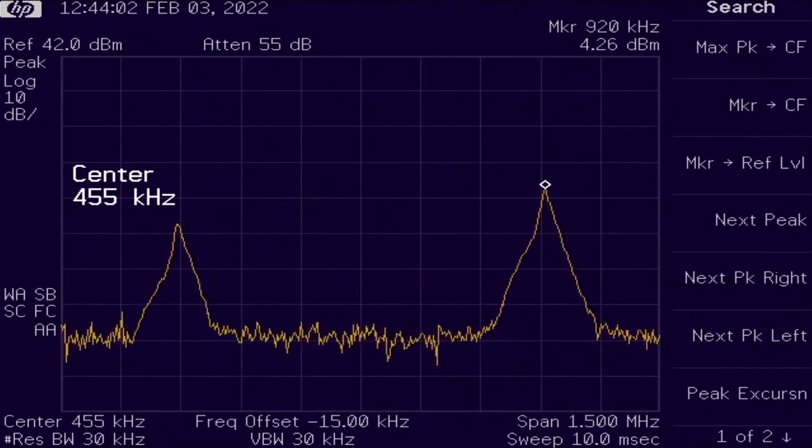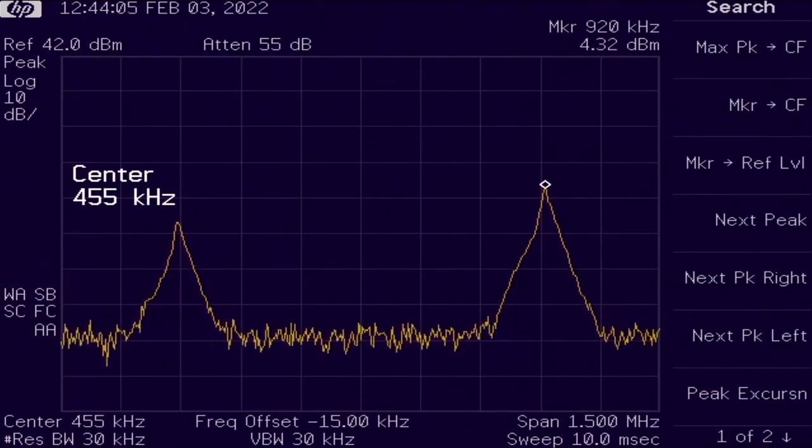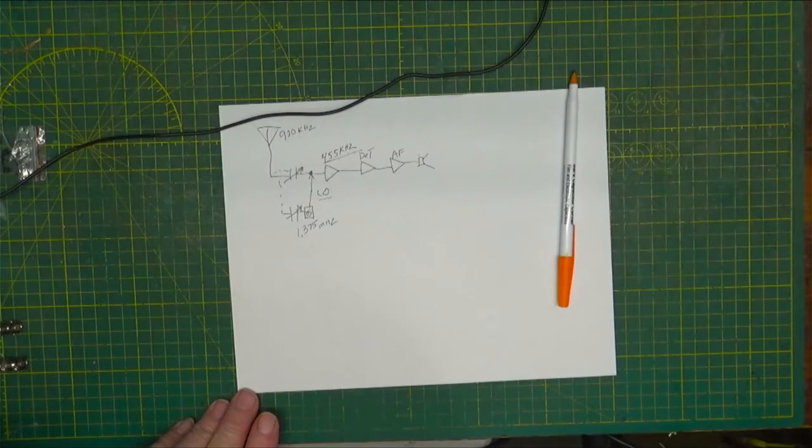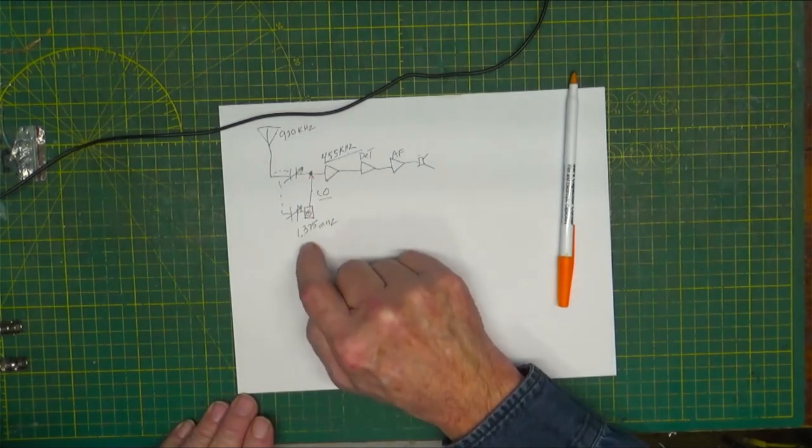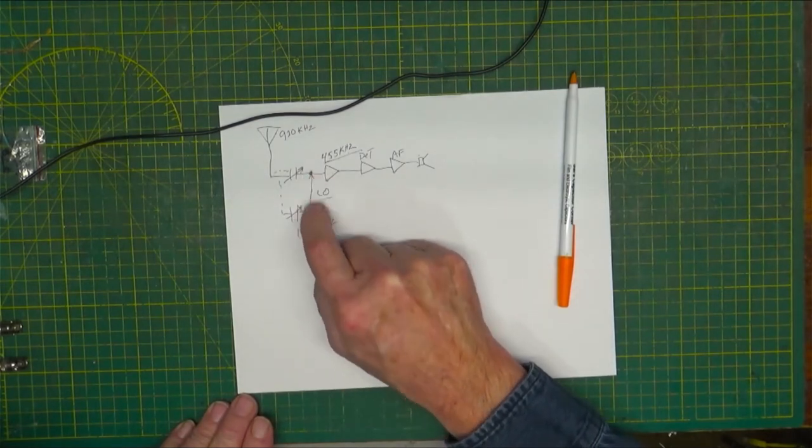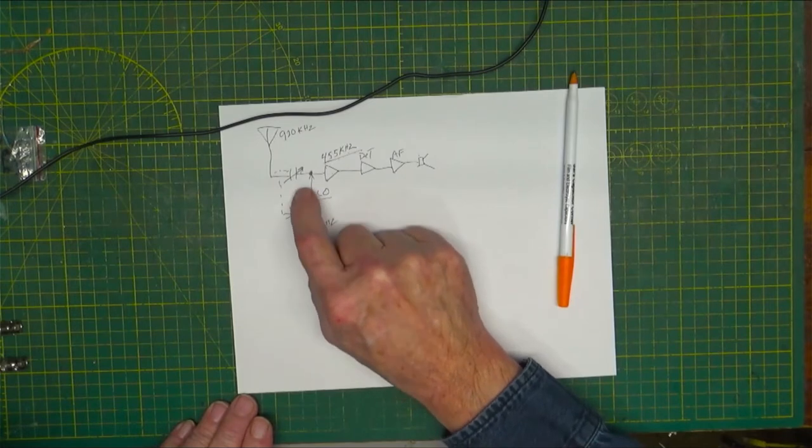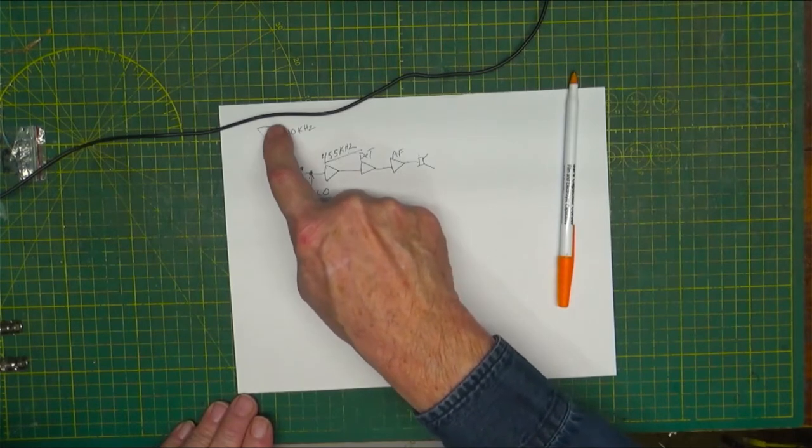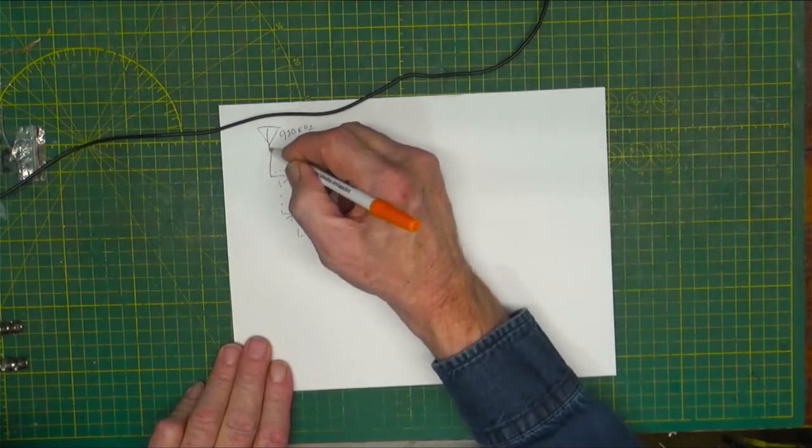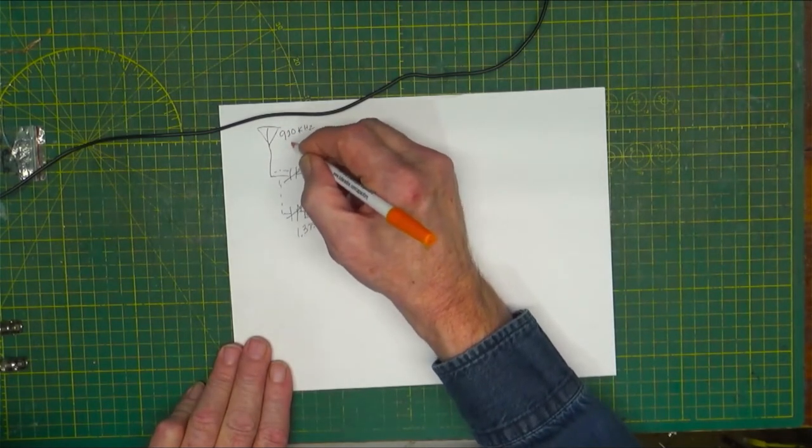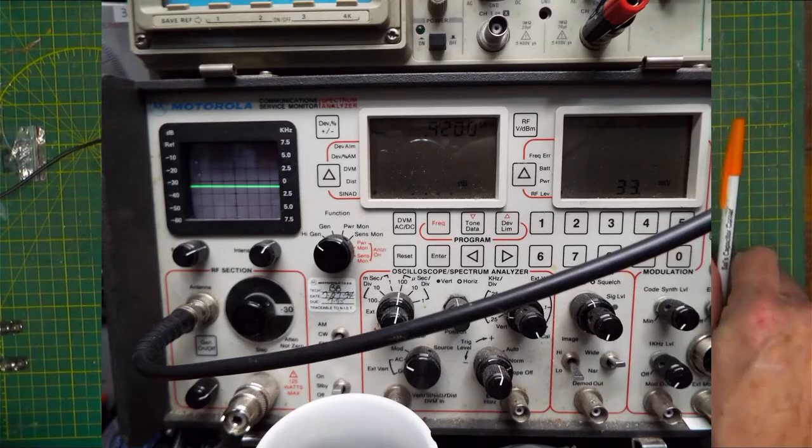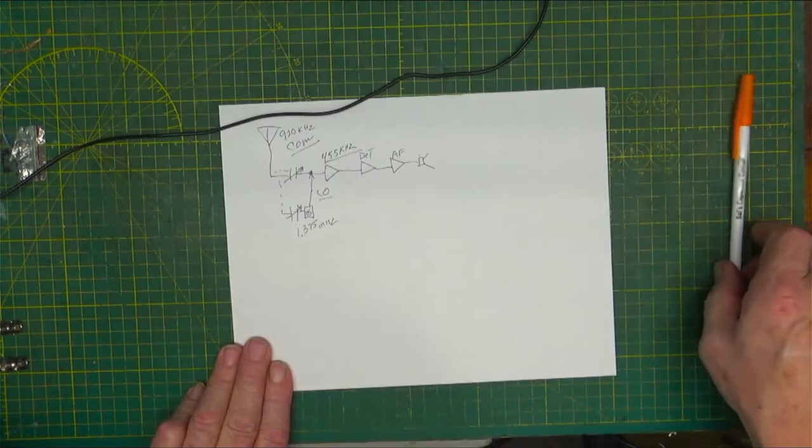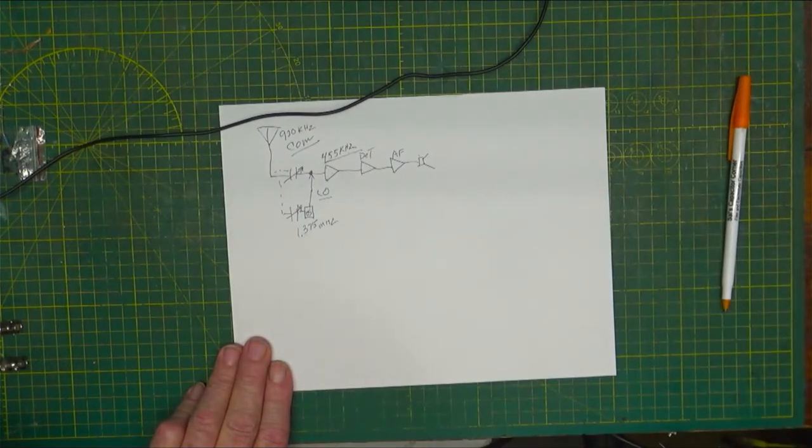This takes a fair amount of input out of these guys because I'm just throwing things together on the bench. So what we're going to do is we are going to inject at this point right here the 1.375 megahertz. The antenna is not there, it's actually the communications generator.